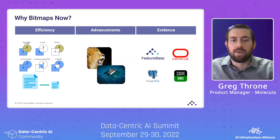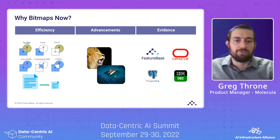Bitmaps make computations on top of the data much more efficient by creating Boolean relationships. Boolean AND, OR, NOT logic and aggregate count and sum operations are really performant on bitmaps. The reduced data footprint also means more data can be stored and computed on in memory using the exact same infrastructure, enabling you to scale without having to scale.